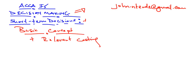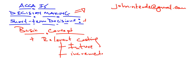So the question is: what is a relevant cost? A relevant cost is three things. One, it is future. Two, incremental. And three, it is a cash flow.